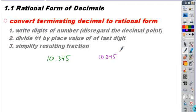The second step is we're going to convert this into a rational form, divided by. We're going to divide by the place value of this last digit. The last digit is a 5. What is the place value of that 5? Remember, place values go tenths, hundredths, thousandths. We're going to divide by 1,000.